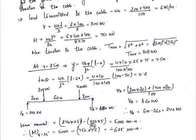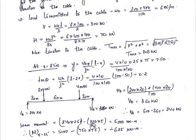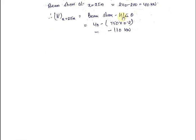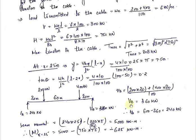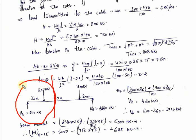Now we need to find the shear force at x = 25 meters. The formula for shear force at any section in a 2-hinged stiffening girder is: SF = beam shear − H × tan θ. We already know H = 750 kN and tan θ = 0.2. We just need to find the beam shear at this section.